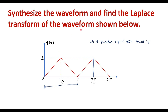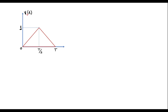In order to find the Laplace transform of a periodic signal, we should consider only one cycle of the periodic signal. Let me consider the first cycle of this periodic signal and call it V1 of t. So V1 of t is only one cycle of the periodic signal V of t.